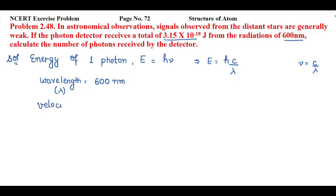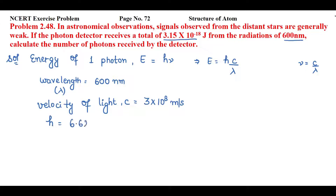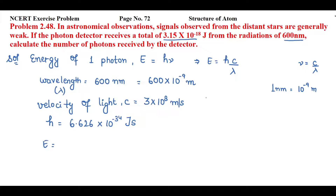Velocity of light c = 3 × 10⁸ meter per second, and Planck's constant h = 6.626 × 10⁻³⁴ joule second. The velocity of light is in meters, but wavelength is in nanometers, so we convert: 1 nanometer = 10⁻⁹ meter, so 600 nm = 600 × 10⁻⁹ meter.